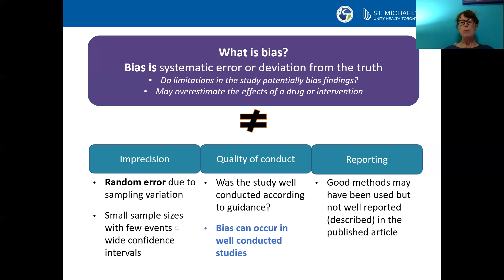Bias should not be confused with imprecision. Imprecision refers to random error, meaning that multiple replications of the same study will produce different effect estimates because of sampling variation. For example, the results of similar, smaller studies with few events are less precise and produce wide confidence intervals. Bias is also not the same as quality in study conduct — even a well-conducted study can be at risk of bias, such as in surgical trials where blinding of the surgeon is impossible.